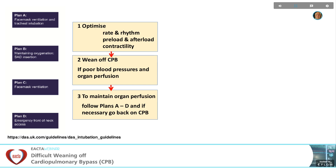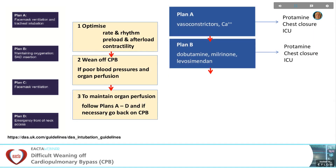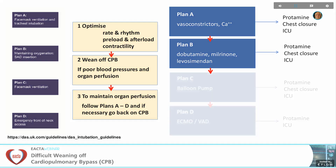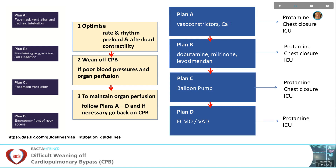If we decided not to go back on cardiopulmonary bypass, we would follow Plan A and give vasoconstrictors and possibly calcium; Plan B, we would give inotropes; Plan C, we would insert the balloon pump; and Plan D, we would use ECMO or VAD. However, Plan C and D can be avoided in most patients by early diagnosis, treatment, and prevention of causes for difficulty to wean from cardiopulmonary bypass.